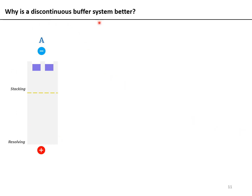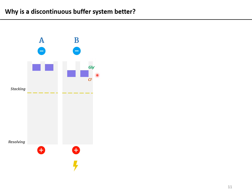Looking at a gel schematic: protein samples are loaded into the wells. The upper portion is the stacking gel and the lower portion is the resolving gel, with the positively charged anode at the bottom. When voltage is applied, the sample begins to enter the gel from the well, with the chloride front at the leading edge and the glycine front at the back.